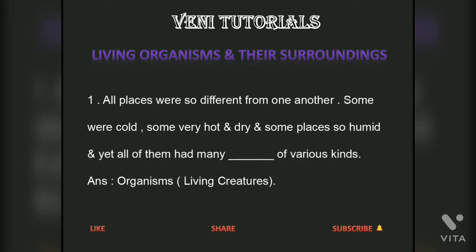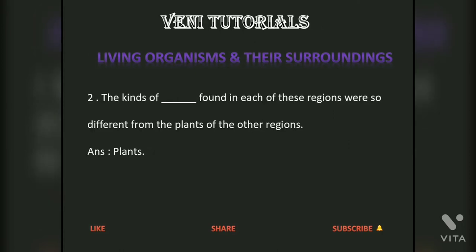All places were so different from one another — some were cold, some very hot and dry, and some places so humid. Yet all of them had many organisms of various kinds. The kinds of organisms found in each of these regions were so different from the plants of the other regions. Answer: Plants.